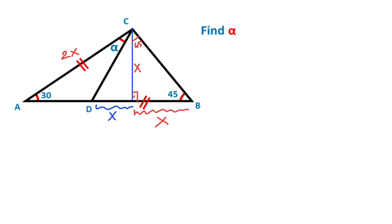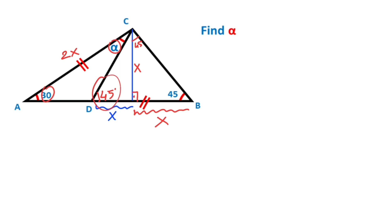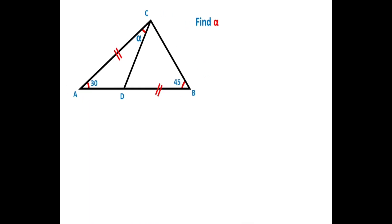Notice that this triangle is essentially a right triangle, so here must be equal to 45 degrees. You know that the sum of the interior angles equals 180 degrees. So alpha must be equal to 15 degrees.